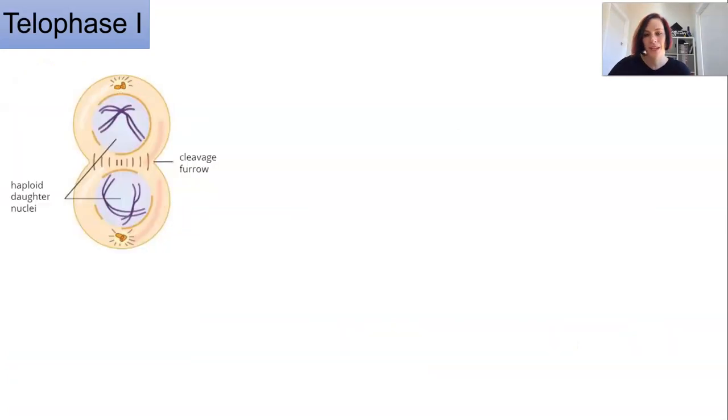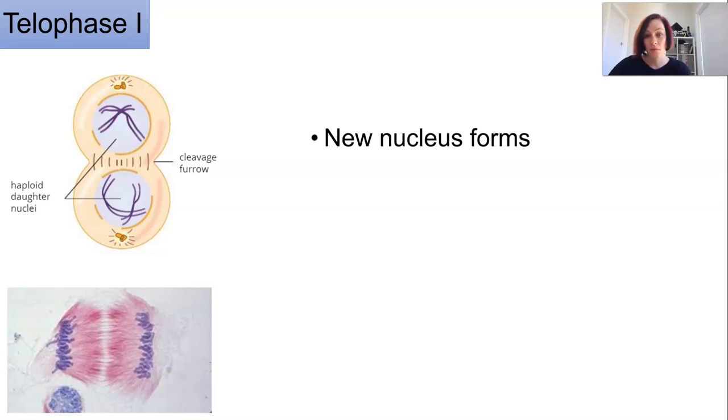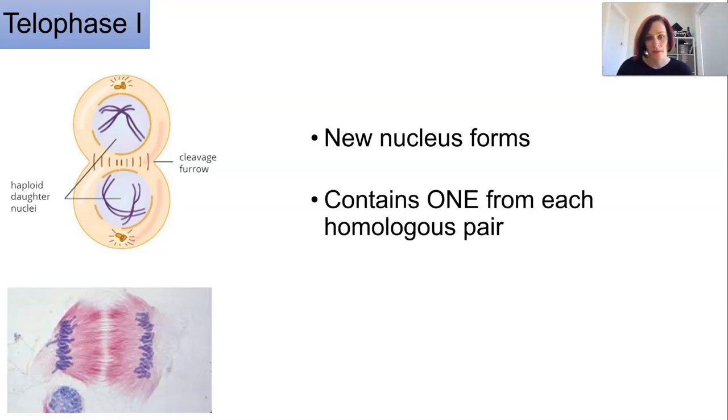By telophase 1 each new nucleus is forming with one of each of the homologous pairs being dragged to the poles. A new nuclear membrane starts to form around that and the spindle fibres break down and the cell separates in the middle.